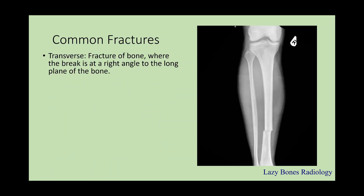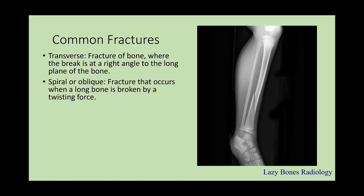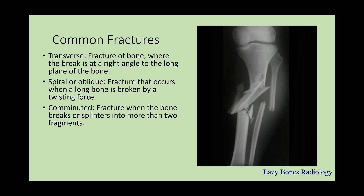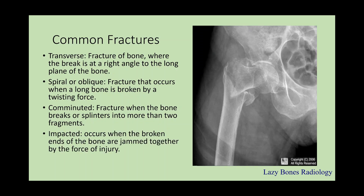A transverse fracture is one where the break is at a right angle to the long bone, as you can see here. A spiral fracture occurs when the long bone is broken with a twisting force. A comminuted fracture is when the bone breaks or splinters into more than two fragments, as seen here with this tibia-fibula. Lastly, an impacted fracture occurs when broken ends of bones are jammed together by a force of injury — here the femoral body is moving up while the head is moving down.